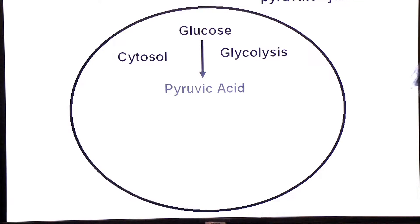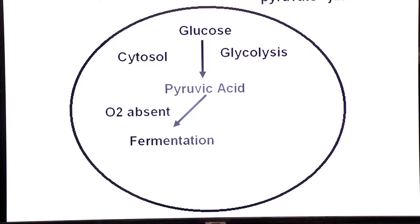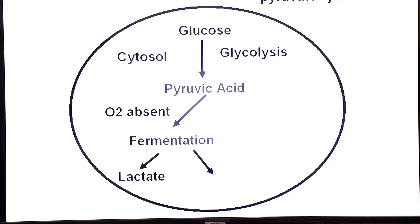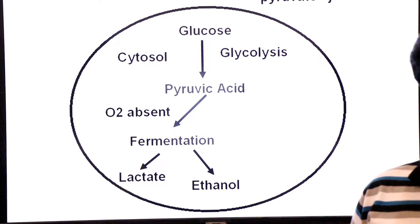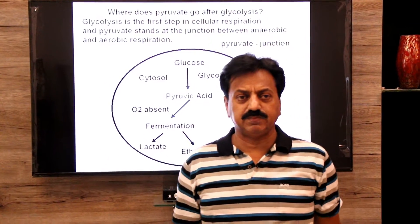There are two conditions. If oxygen is absent, the pyruvate acid goes through the fermentation process. Fermentation has two types: lactic acid fermentation and ethanol fermentation. Let me explain this in a little more detail.